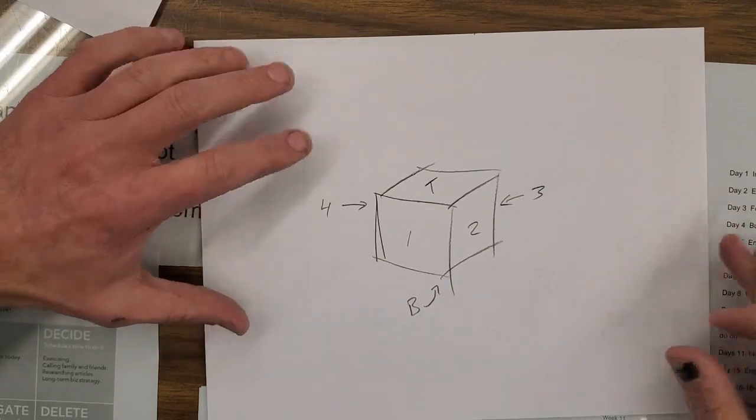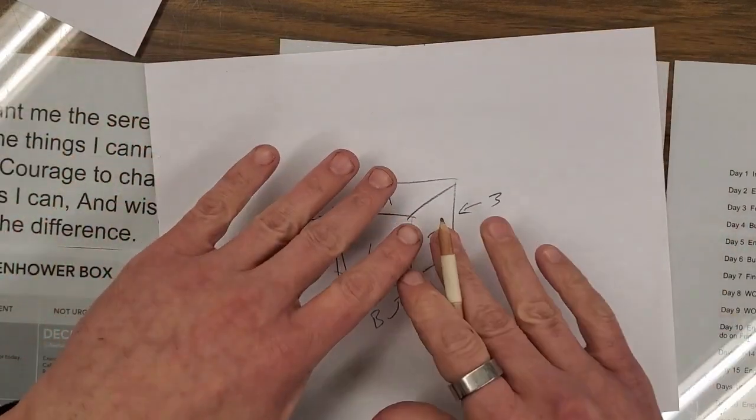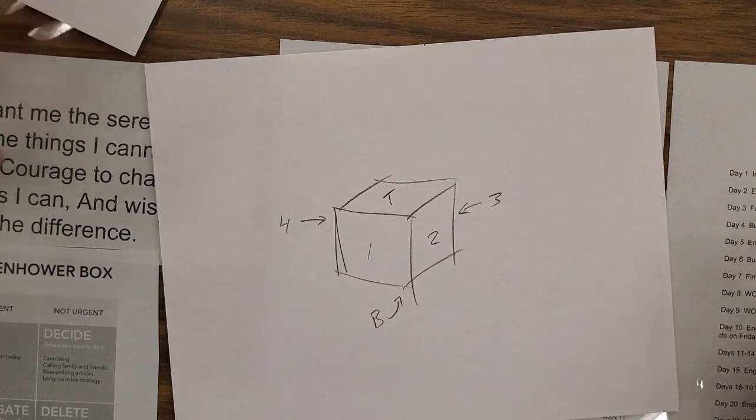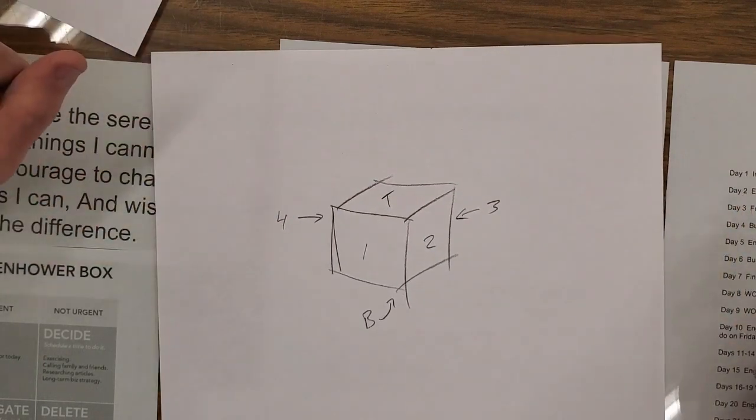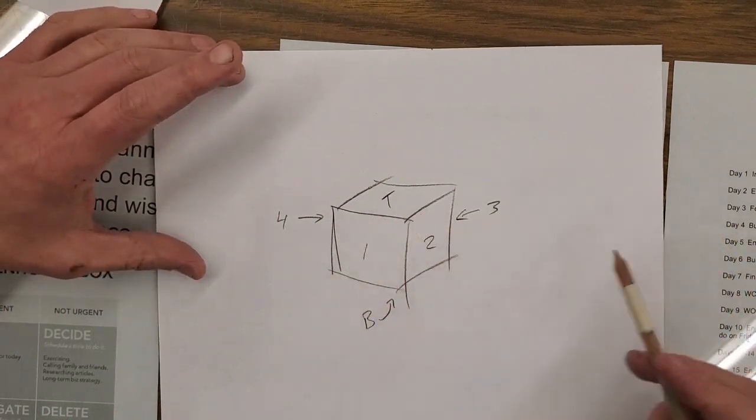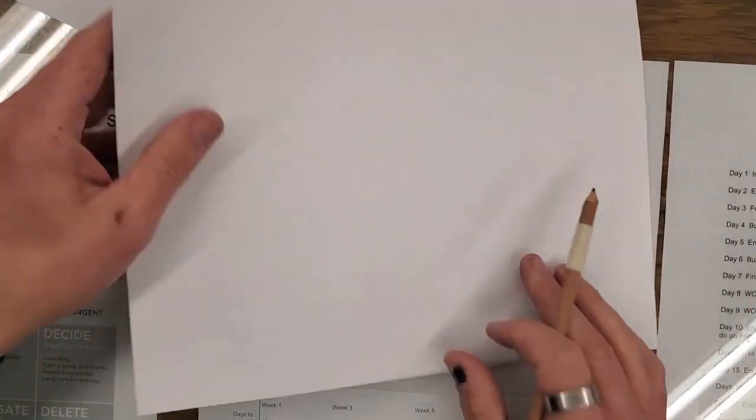With a cube, it's pretty easy to do. If we were to unfold this, we can put the sides all in a strip, for example.